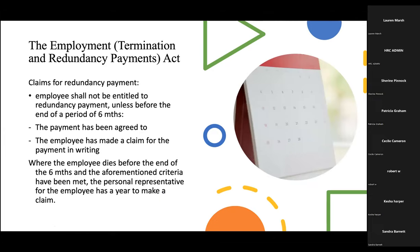Regarding claims: an employee shall not be entitled to redundancy payment unless before the end of a six-month period the employee has made a claim for the payment in writing. Where the employee dies before the end of the six months and the criteria have been met, the personal representative has a year to make a claim. In practice, because situations are handled at the administrative level of the Ministry of Labor, it may take over a year for payment to be made.